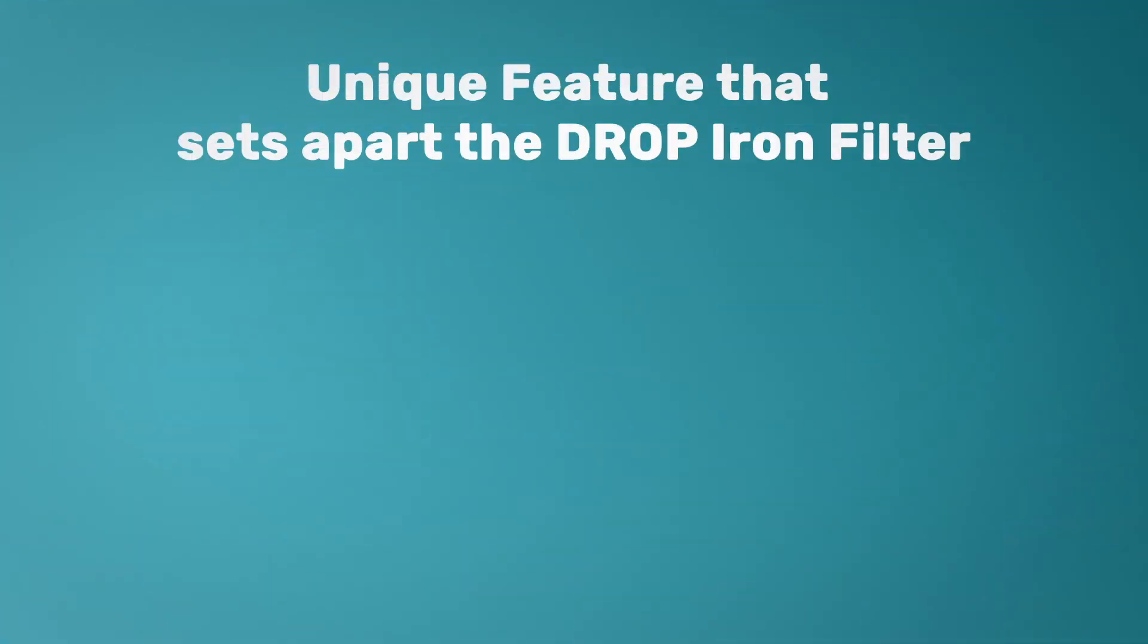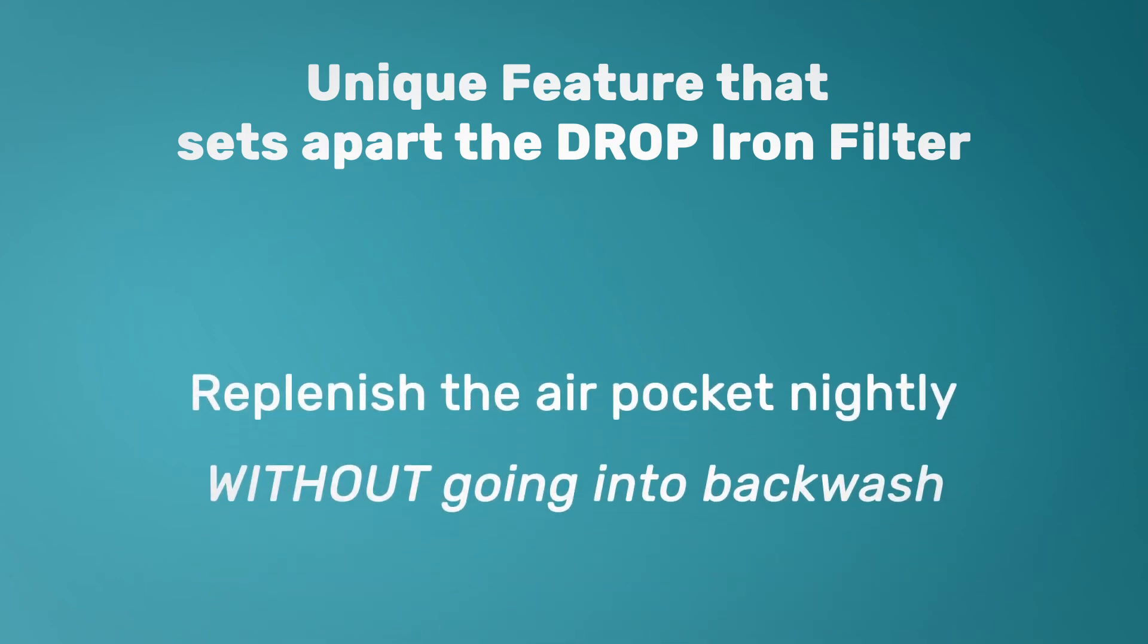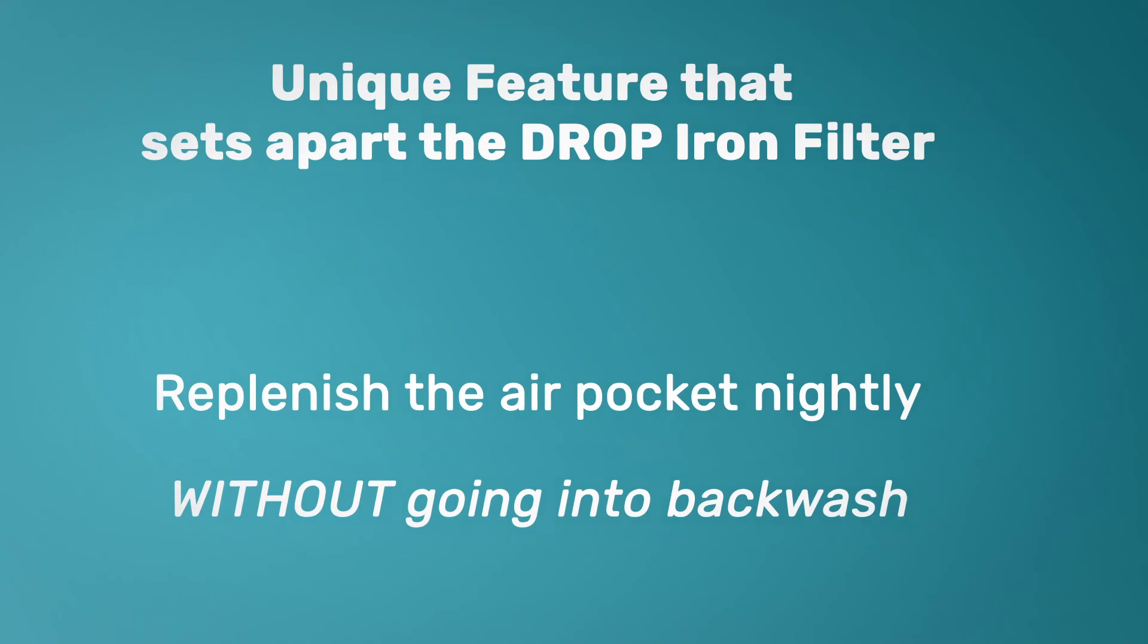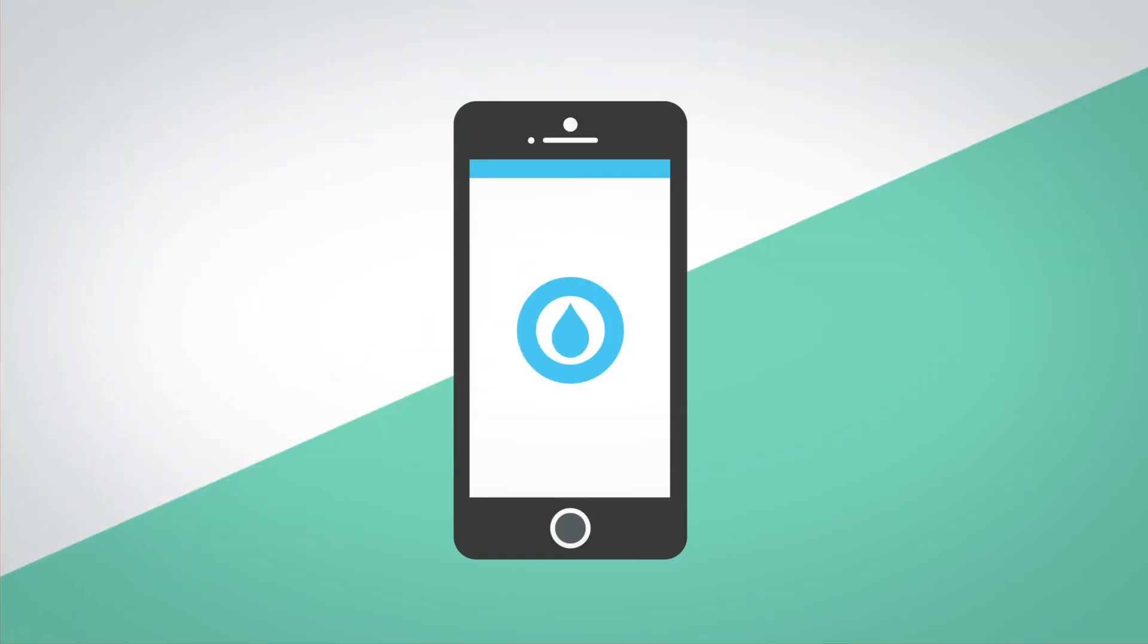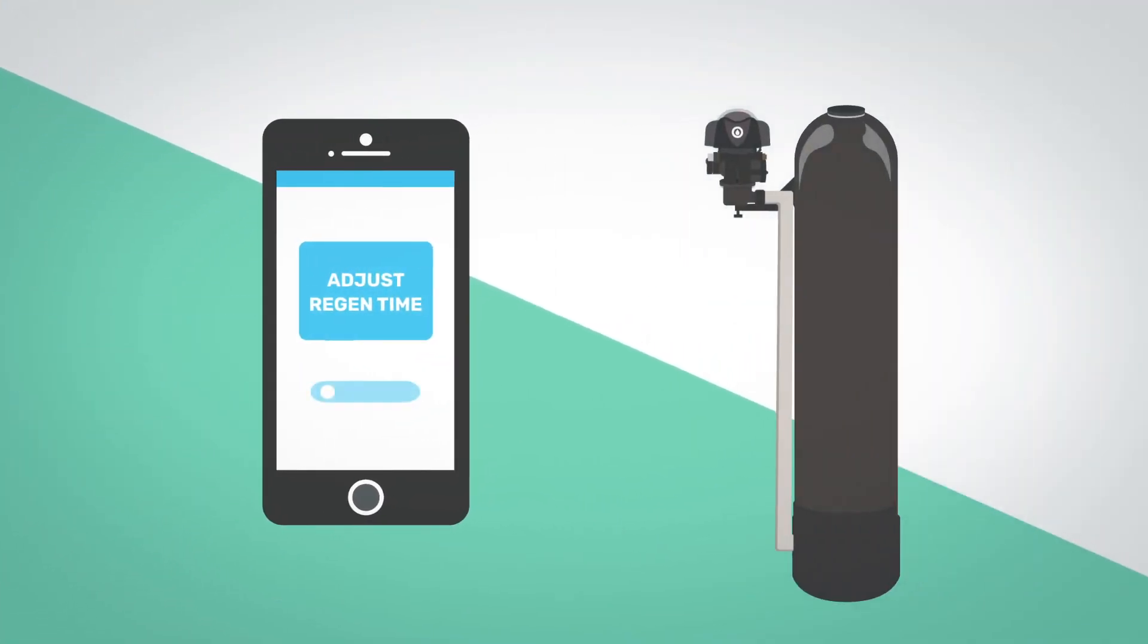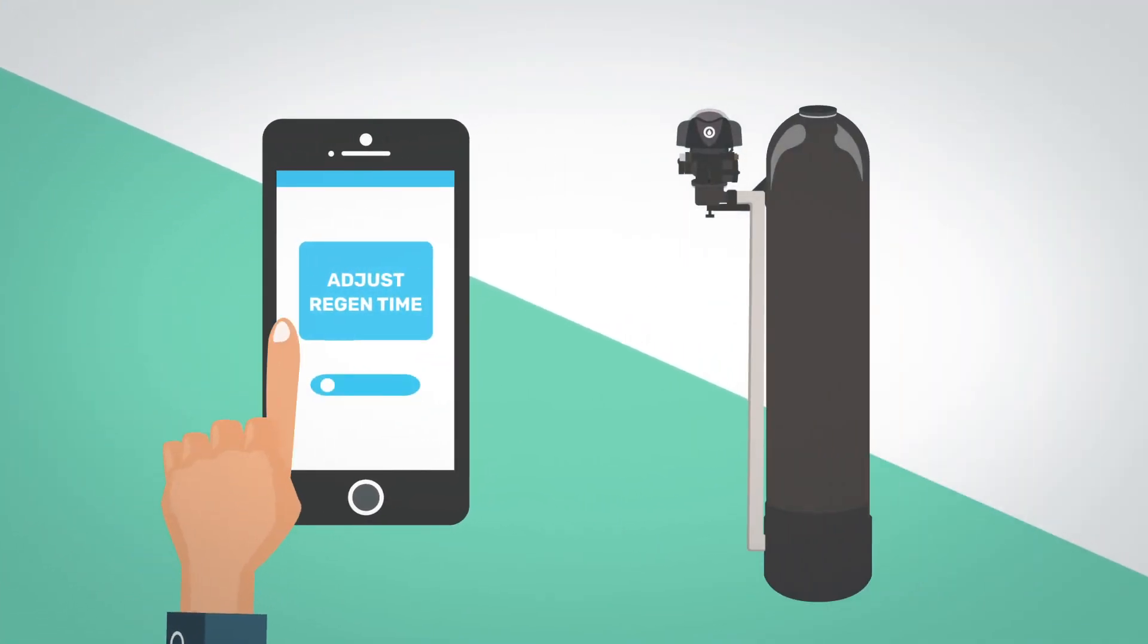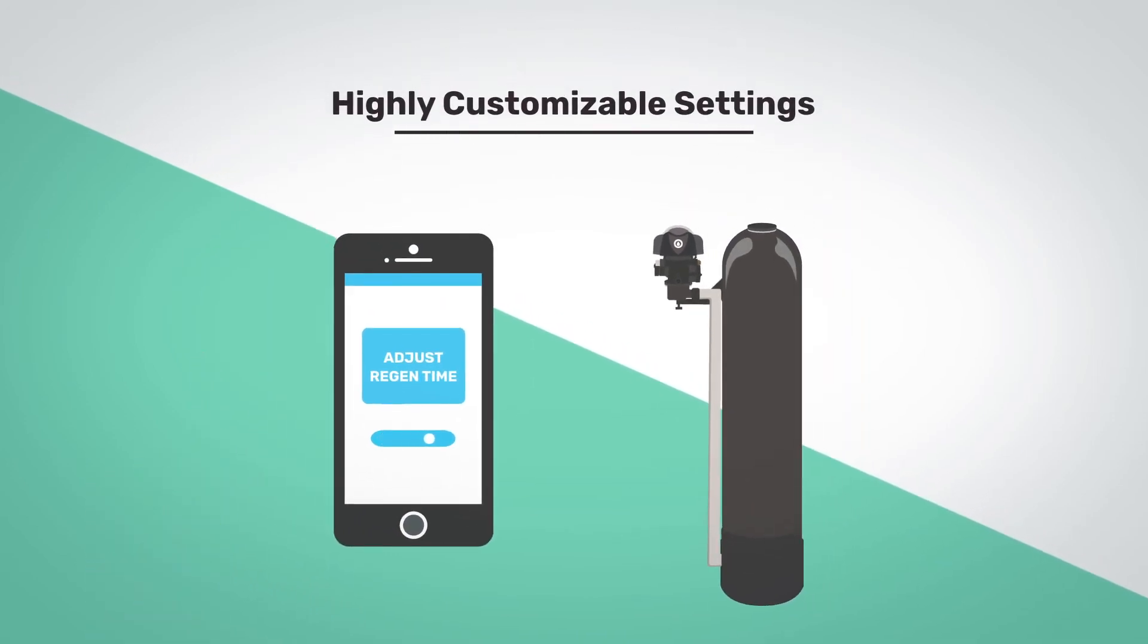Another feature that sets our iron filter apart is the ability to replenish the air pocket in the tank nightly without having to enter a backwash step, which saves 50 to 70 gallons of water per cycle compared to the full regeneration. Though many users simply leave their systems set at our factory default settings, the DROP app gives you complete control over how often your system performs regeneration or an air replenish cycle, as well as what time these cycles occur and how long each step lasts.